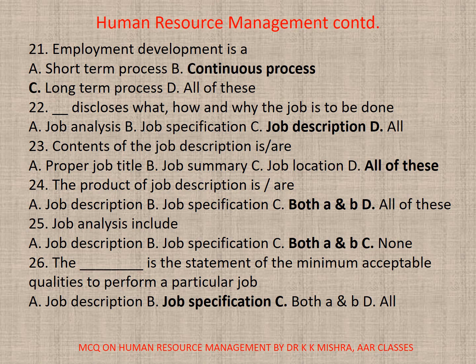Question 24. The product of job analysis is: A. Job description. B. Job specification. C. Both A and B. The correct option is C. Both A and B. Question 25. Job analysis includes: A. Job description. B. Job analysis. C. Both A and B. The correct option is C. Both A and B. Question 26. This is the statement of the minimum acceptable qualities to perform a particular job. The correct option is job specification.